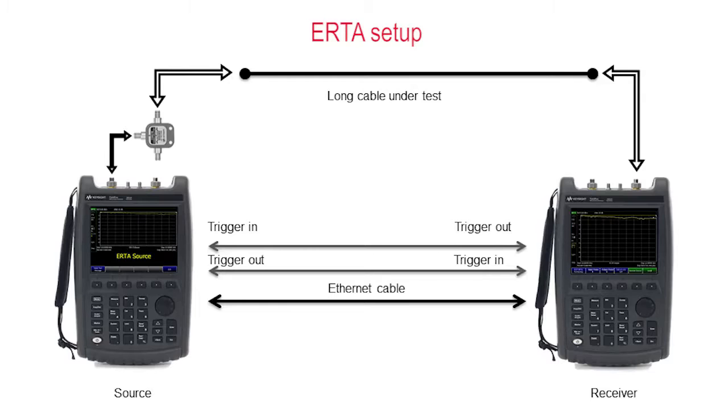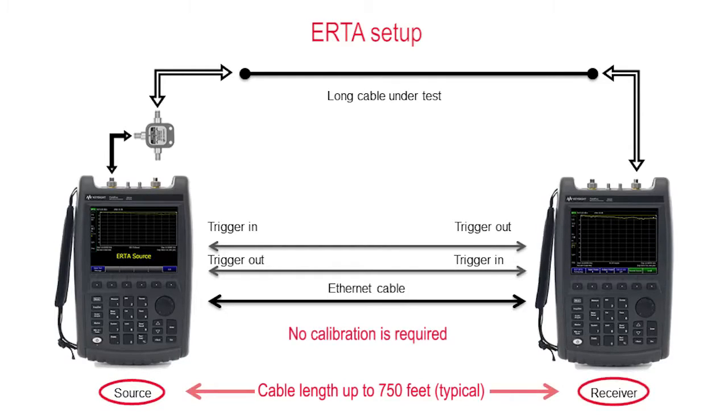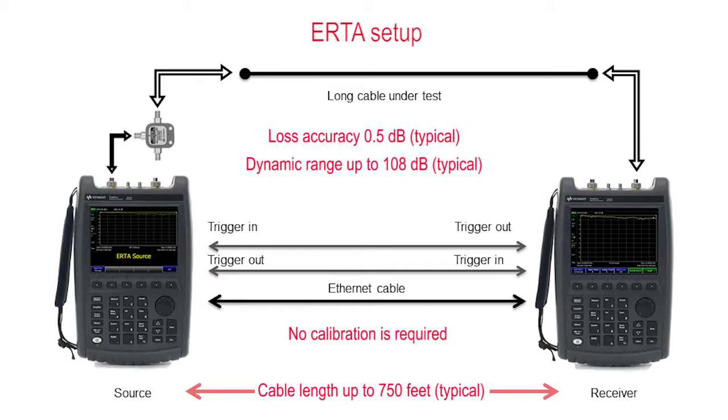The configuration uses two FieldFox units, one as a source and the other as a receiver. They're synchronized in sweep. Loss accuracy of 0.5 dB is typical. Dynamic range of up to 108 dB is typical.